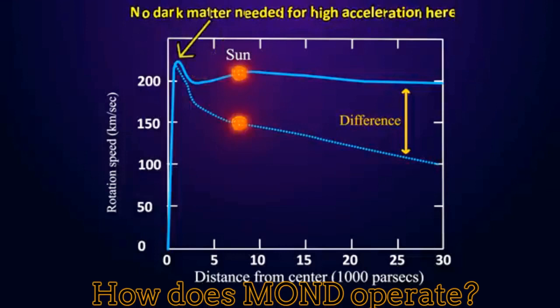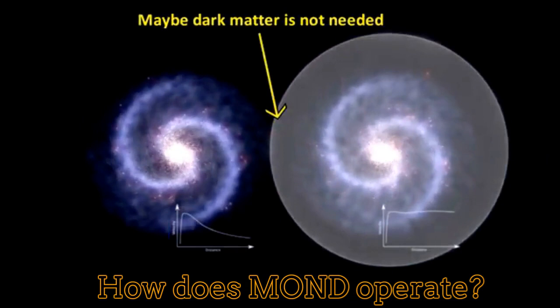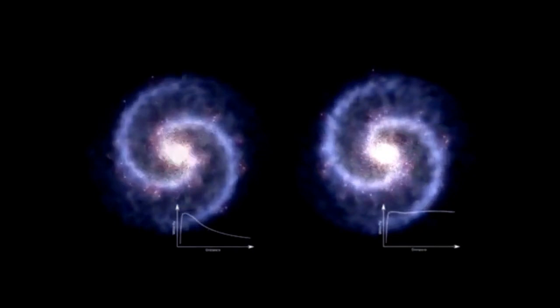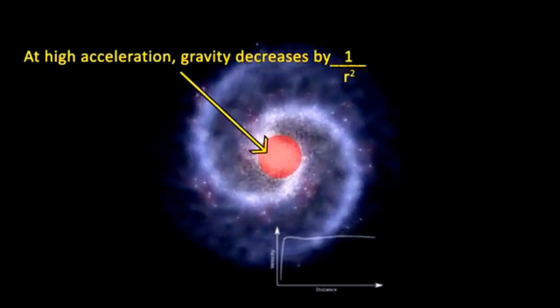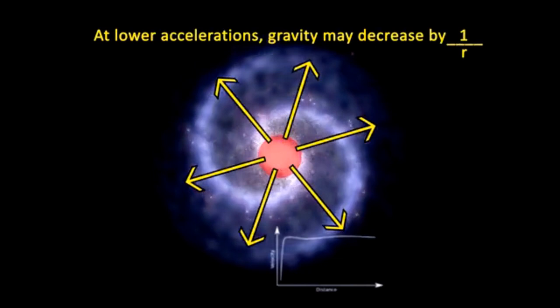But how does MOND operate? When the matter rotates around the galaxy, it experiences a centripetal acceleration towards the center of the galaxy. If matter is removed from the center of the galaxy, the slower the matter should rotate in order to keep the orbit, but the slower rotation means a smaller centripetal acceleration. When the acceleration reaches the MOND scale or lower, the effects of Modified Newtonian Dynamics appear, generating corrections to the Newtonian gravity.